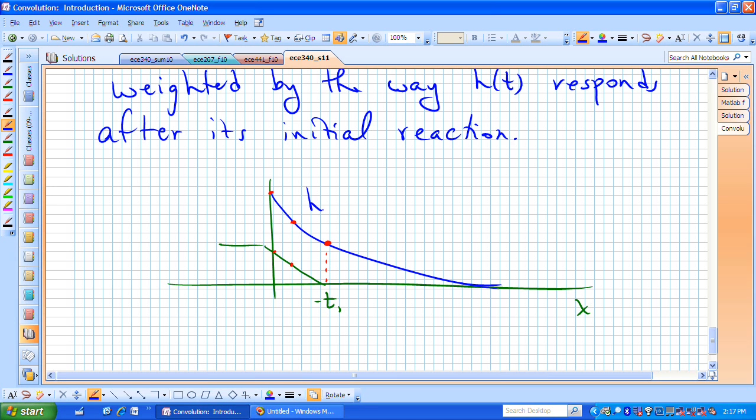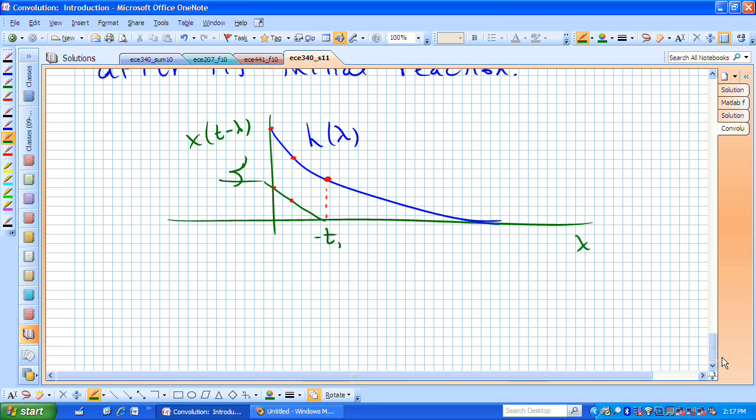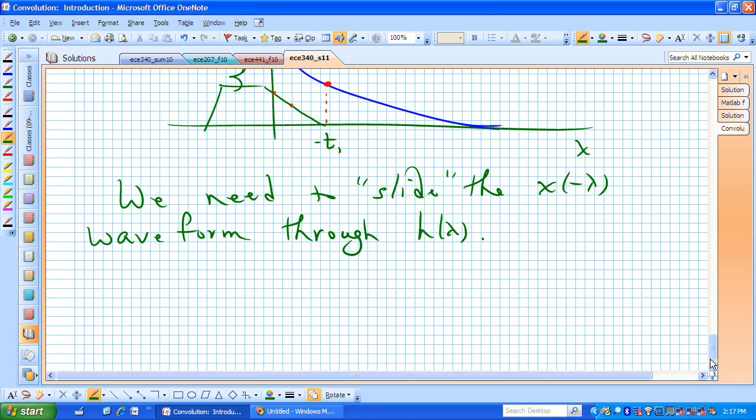This blue curve is our h of lambda, and this one was our x of minus lambda, but I hope now it looks like, wait a minute, we're now moving that around, it wasn't at the point minus lambda any longer, we've now slid it to the right, so what we need to do with respect to this waveform is now we need to slide the x of minus lambda waveform through our impulse response waveform h of lambda.